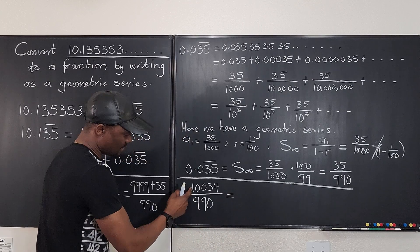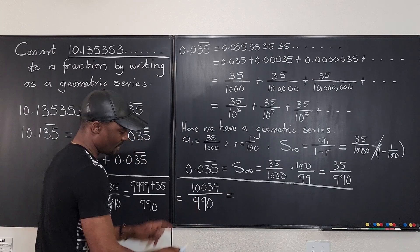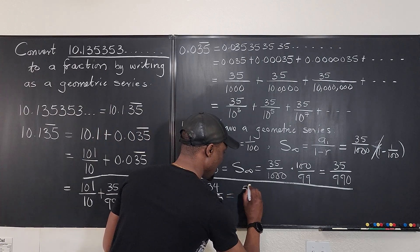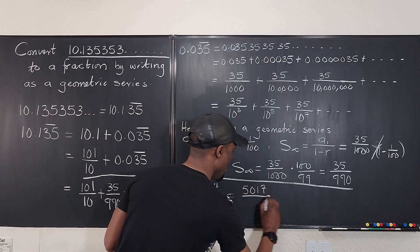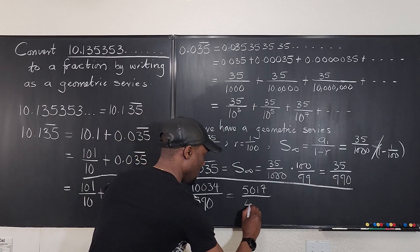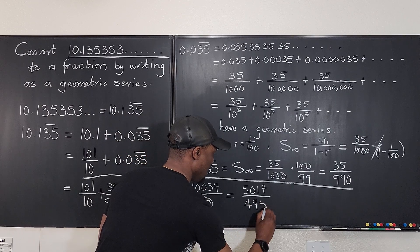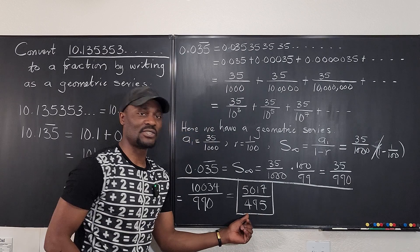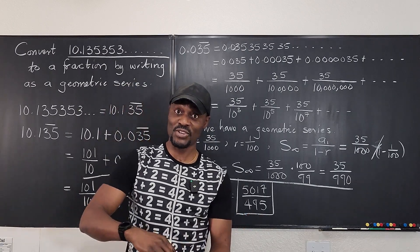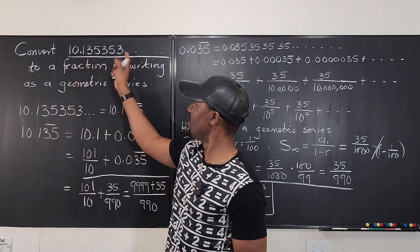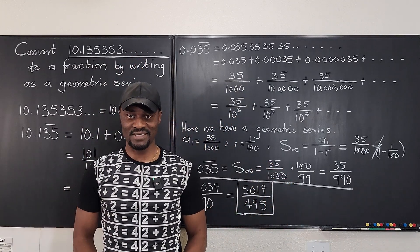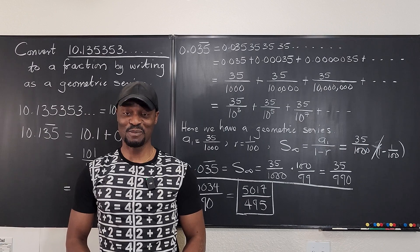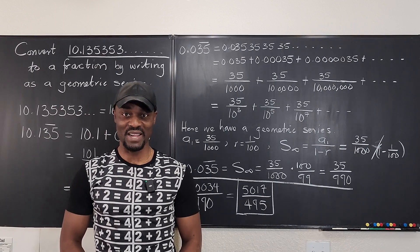Dividing 10,034 and 990 each by 2 gives us 5017 over 495. This is the fraction that, when divided on your calculator, gives you the decimal that never ends. I'll see you in the next video — never stop learning, because those who stop learning have stopped living. Bye-bye!